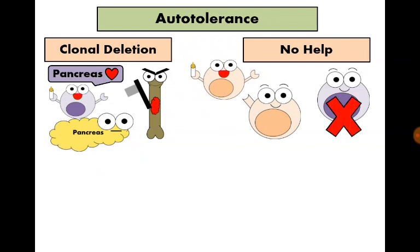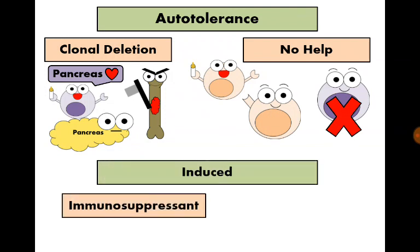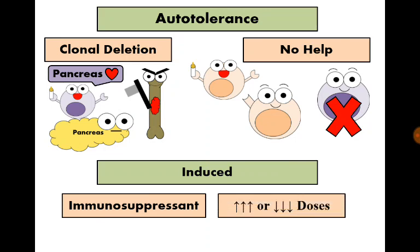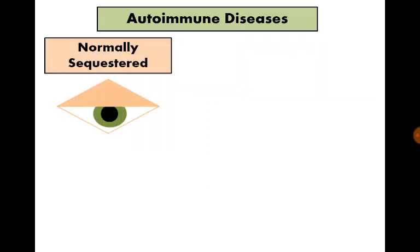Tolerance can also be induced by immunosuppressants and by introducing very high or very low doses of an antigen. Now, what causes autoimmune diseases? Some organs are normally sequestrated organs, like the eye and the testes.